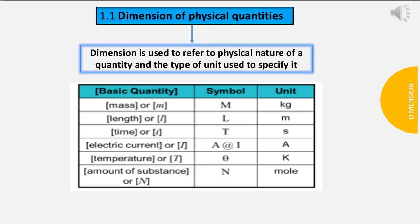Dimension for electric current: Symbol I or A, Unit ampere A. Dimension for temperature: Symbol Theta, Unit Kelvin K.